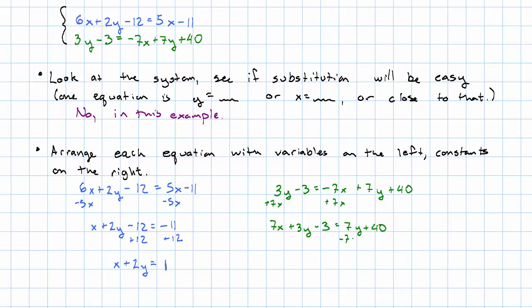We'll subtract 7y on both sides. So, 7x - 4y - 3 = 40. And we'll add 3 on both sides. 7x - 4y = 43.